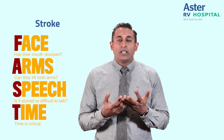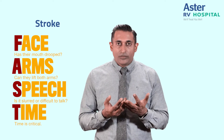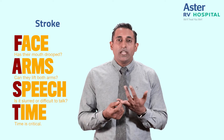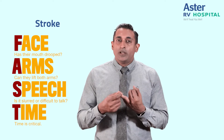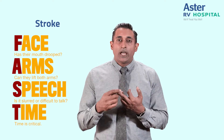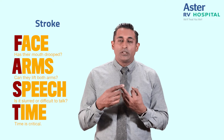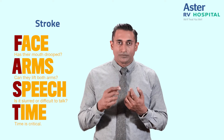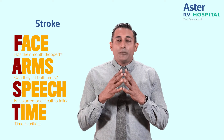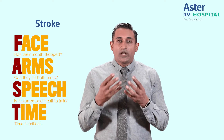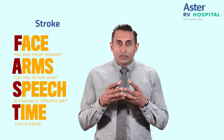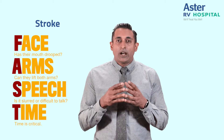FAST means there's a facial asymmetry — that is the F that stands for it. A is for arm drift or a weakness in the arms. And S is for slurred speech or an impairment in speech. So when you have a patient who has had these symptoms, that patient is probably having a stroke.